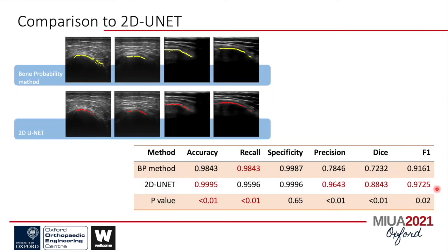The next slide demonstrates the results of comparison with the machine learning method. From the qualitative comparison, we can see a similar issue as before. However, both methods achieve a similar level of quality. Similarly, in the quantitative comparison, the bone probability method only performed better in recall.